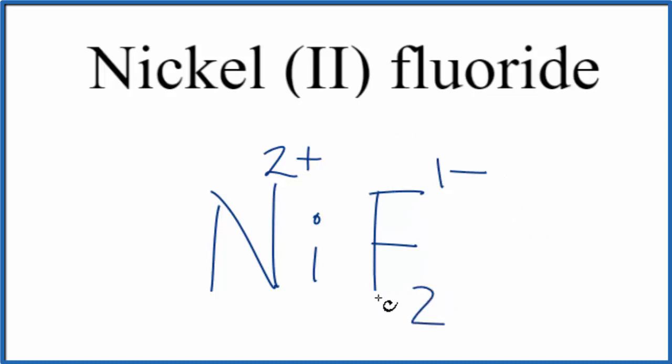If we had two of these fluorine atoms, 2 times 1- would give us 2-, so 2- and 2+ would add up to zero. So the formula for nickel (II) fluoride is NiF₂.